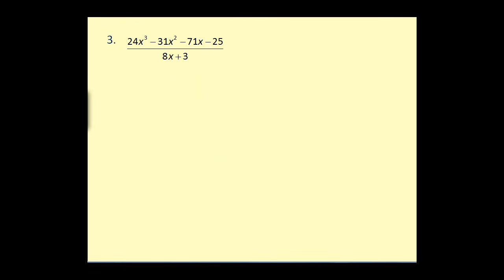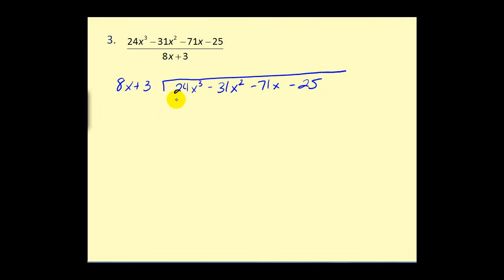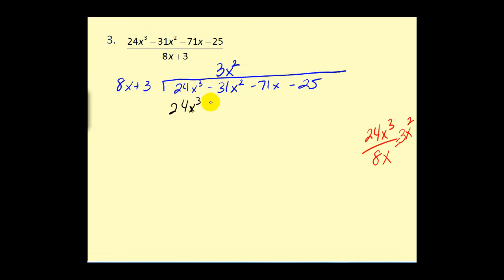Let's take a look at one more. In this problem there were no missing terms in descending order, so we can go ahead and start. What times 8x will equal 24x cubed? Well, 3 times 8 equals 24 and x times x squared equals x cubed, so it's 3x squared. If that's difficult, take the highest degree term of the dividend and divide it by the highest degree term of the divisor — that also equals 3x squared. Multiplying by the divisor: we have 24x cubed plus 9x squared. Subtracting by adding the opposite, the result would be negative 40x squared.